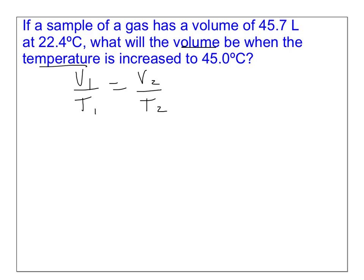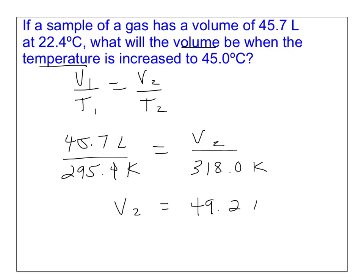The volume is 45.7 liters, and then the temperature, 22.4 degrees Celsius in Kelvin, is 295.4 Kelvin. We added 273. We're going to find the new volume when we change the temperature to 45 degrees Celsius, that's 318 Kelvin. I'm going to round my answer to 3 sig figs, 49.2 liters. This should make sense, as we have increased the temperature, so the volume should increase in turn.